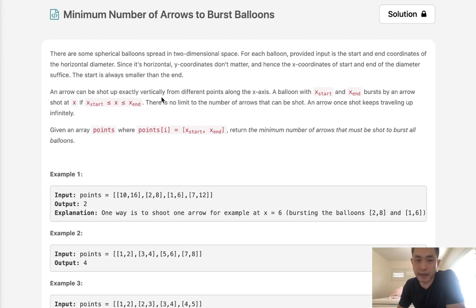Now, an arrow can be shot up exactly vertically from different points along the x-axis. A balloon with x_start and x_end burst by an arrow shot at x if x is within x_start and x_end. There's no limit to the number of arrows that can be shot.